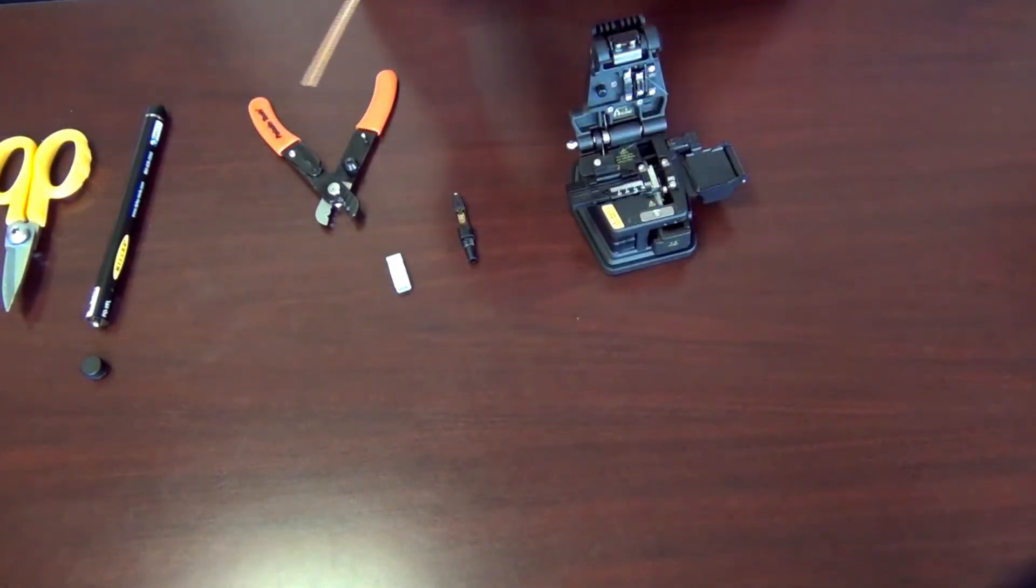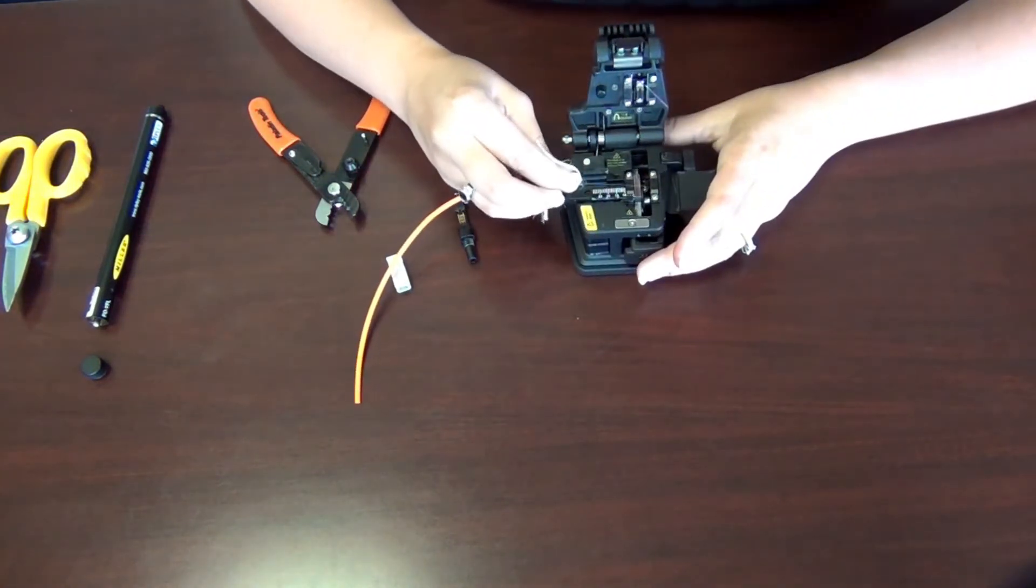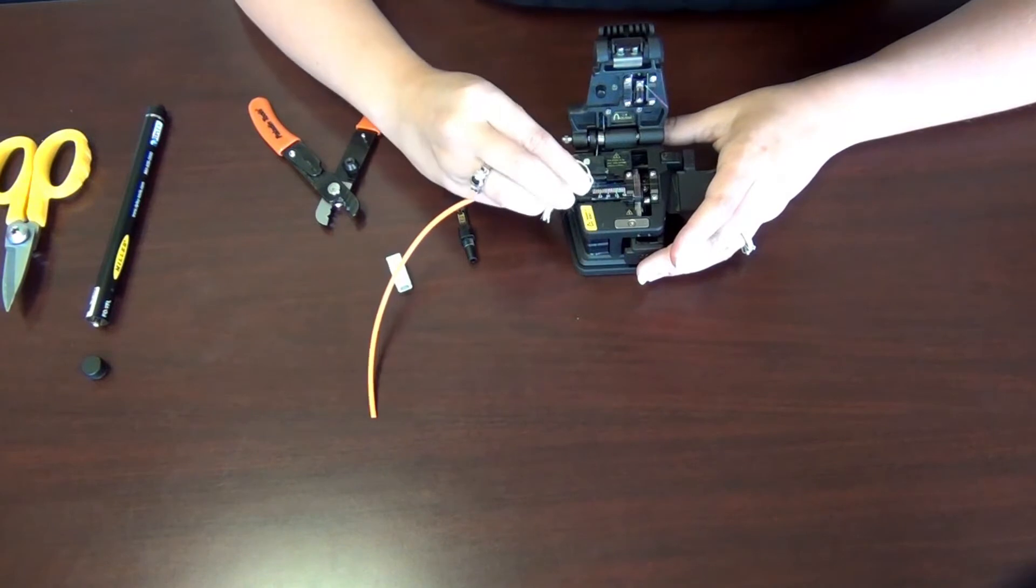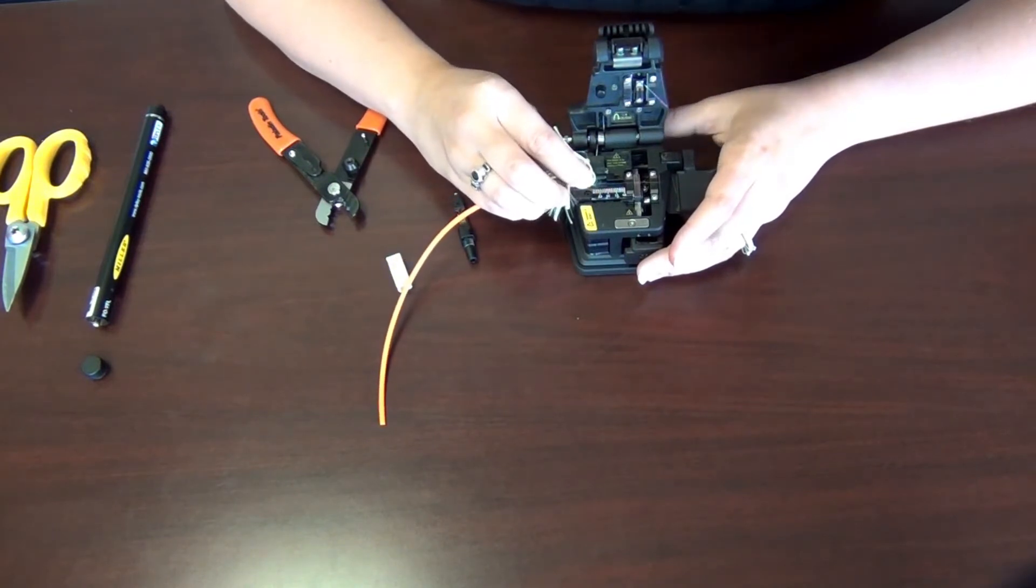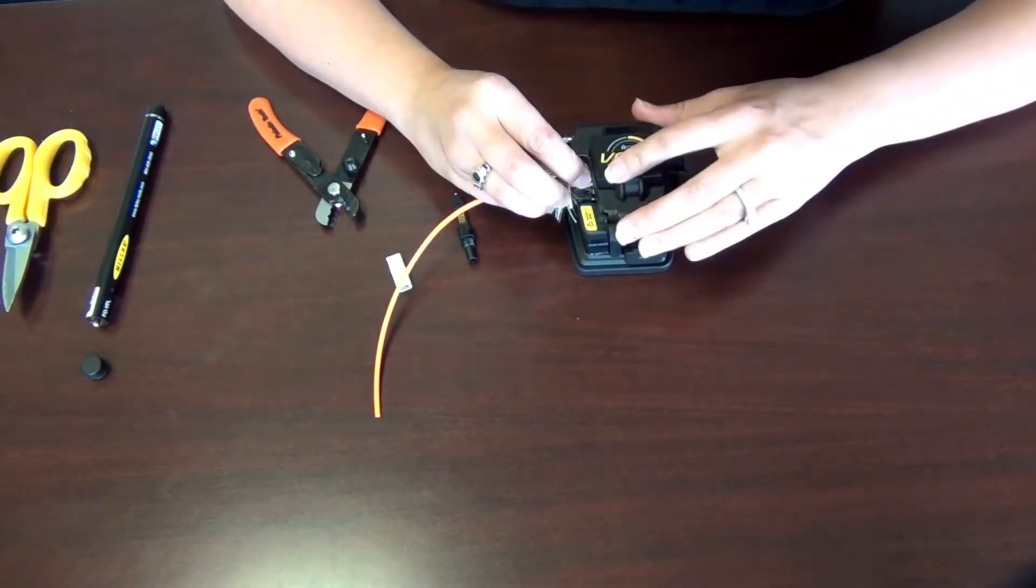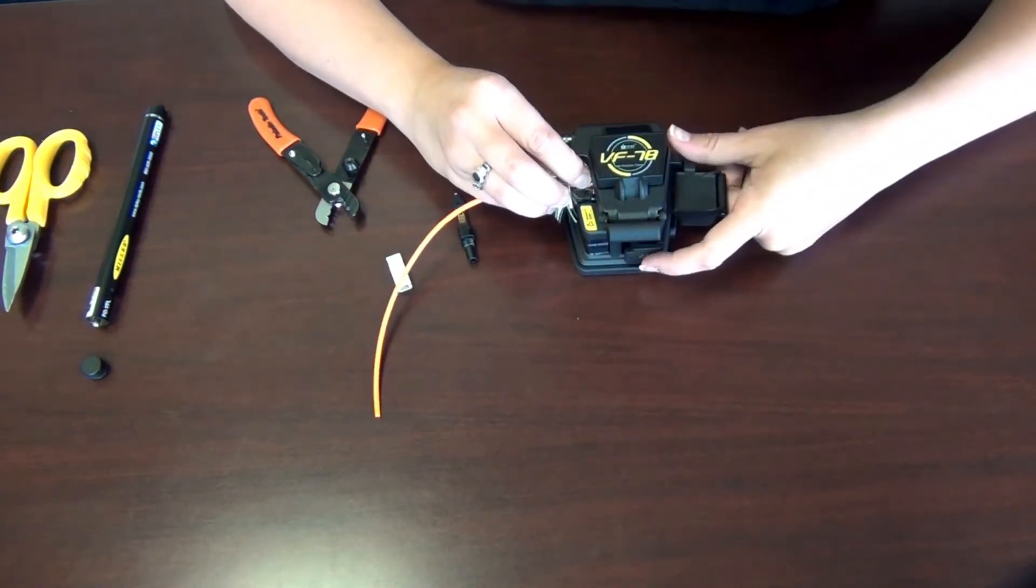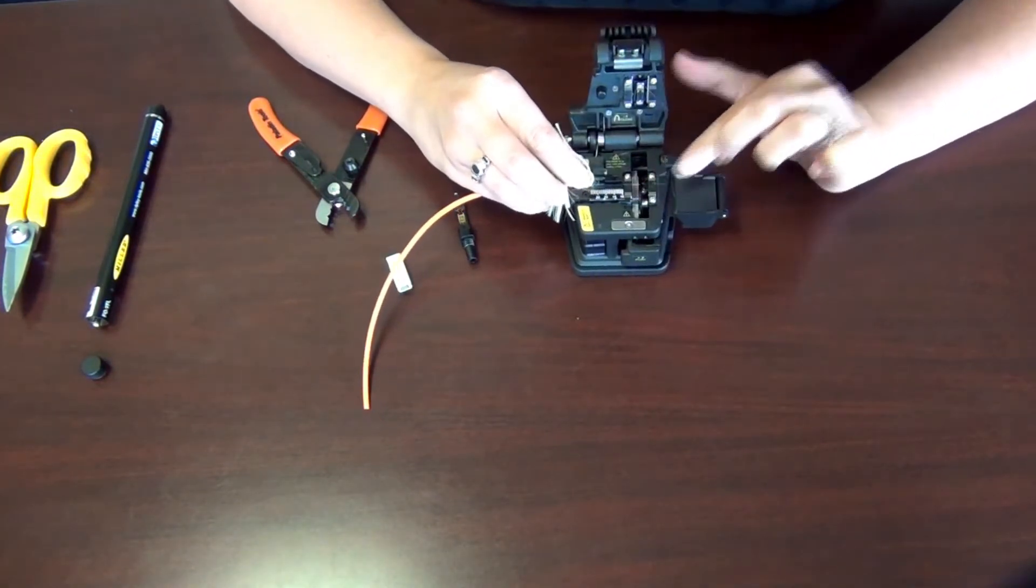Now we're going to cut it to the right length. This cutter also came with the clear line termination kit. We're just going to fit it right in here. You want to make sure that your wire lines up to about 28 millimeters. It's going to make sure that it's the right length to go in the connector. Just snap this down and push this button back and it's cut.